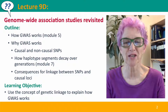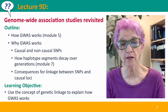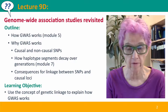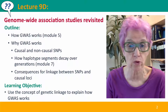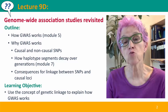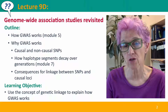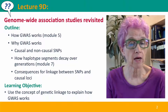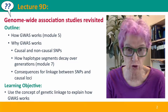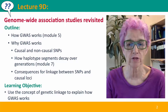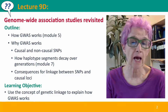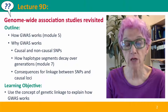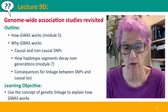Hi, everyone. Welcome back to Useful Genetics. This is Lecture 9-D, where we're going to revisit the genome-wide association studies that we introduced in Module 5. I'll remind you of how GWAS studies work, and then we'll consider why they work, first starting with the issue of causal versus non-causal SNPs, and then thinking about how the association part of GWAS decays over time in haplotype segments that contain non-causal SNPs and the phenotype-changing alleles that we're really interested in.